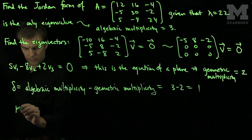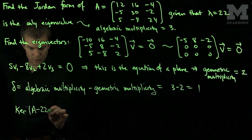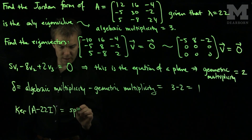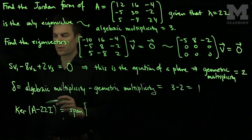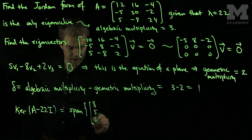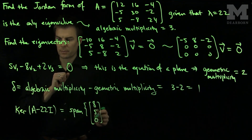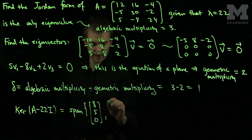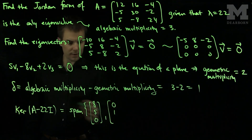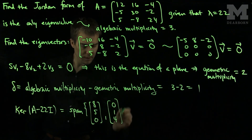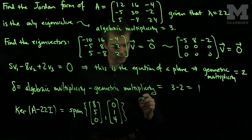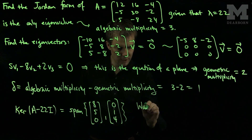The kernel of A minus 22 times the identity is the span of any two independent vectors on this plane. We can choose the vector V1 = (8, 5, 0), which lies on the plane, and the vector V2 = (0, 1, 4), which also lies on the plane. These are our two eigenvectors.